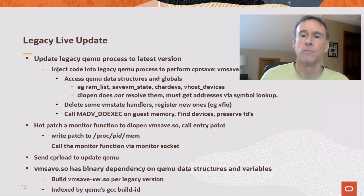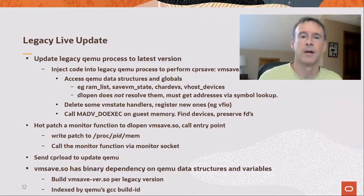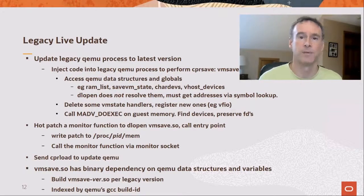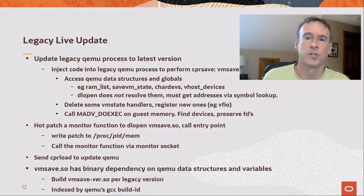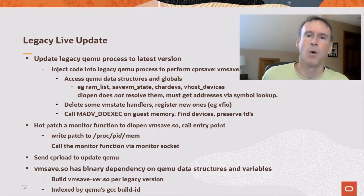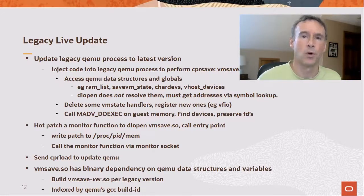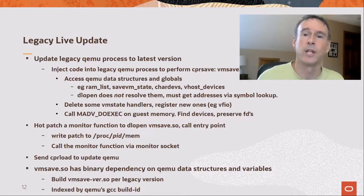I've shown you how to update QEMU using CPR save, which implies you must start with a recent version that supports the command. However, we can also update a legacy version by dynamically injecting code that performs the equivalent of CPR save. The VM save shared object provides the injected code. It accesses QEMU data structures and globals, such as the list of RAM handlers, the list of VM state handlers, character devices, and vhost devices. However, dlopen does not resolve the address of these globals when VM save is loaded because QEMU is loaded with the RTLD_LOCAL flag, so we wrote code to find the addresses by looking them up in the symbol table.